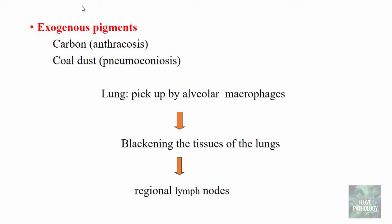The most common exogenous pigment is carbon — carbon or coal — which is the ubiquitous air pollutant present in most urban areas. When there is accumulation of carbon, we refer to it as anthracosis; when there is accumulation of coal dust, we refer to it as pneumoconiosis. These pigments are picked up by alveolar macrophages and can be deposited within the parenchyma of the lung or transported to the regional lymph nodes, producing pigmentation in both locations.